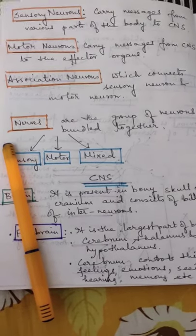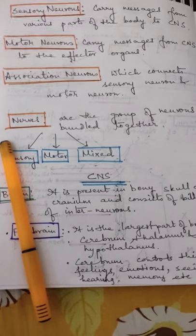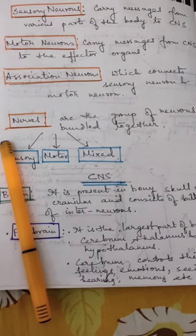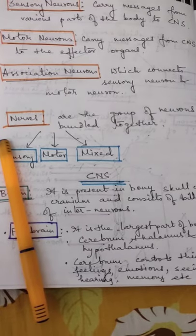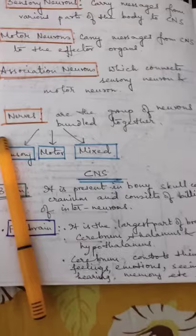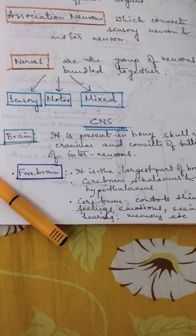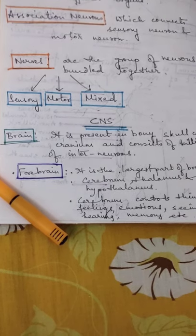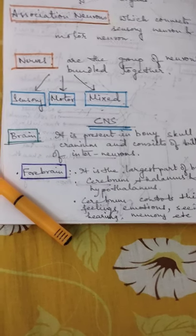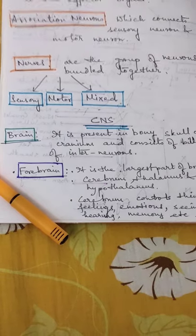Now we always talk about nerves - what are these nerves? They are groups of neurons bundled together. Nerves are of three types: sensory, motor, and mixed. Here we don't call it association nerve, we call them mixed nerve.